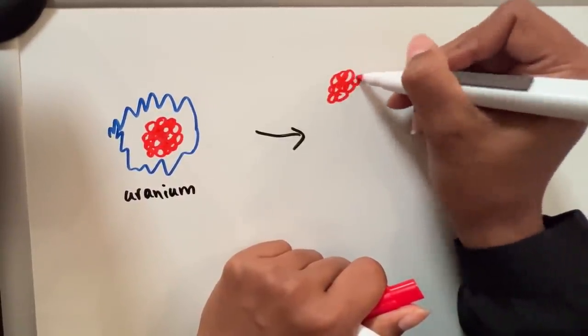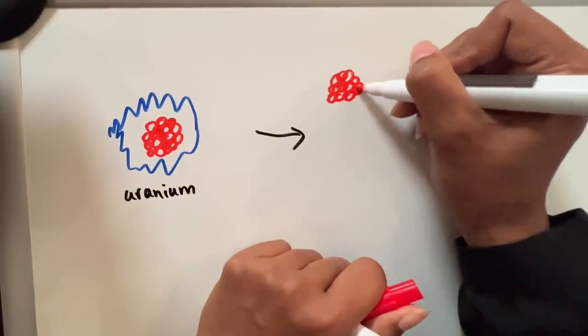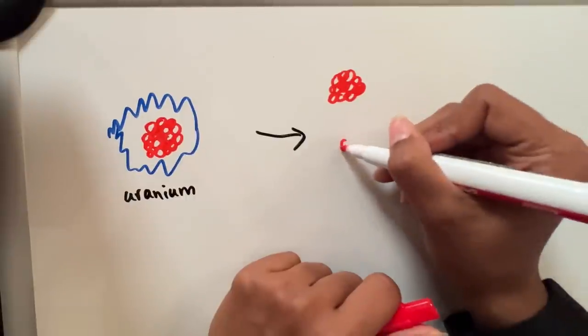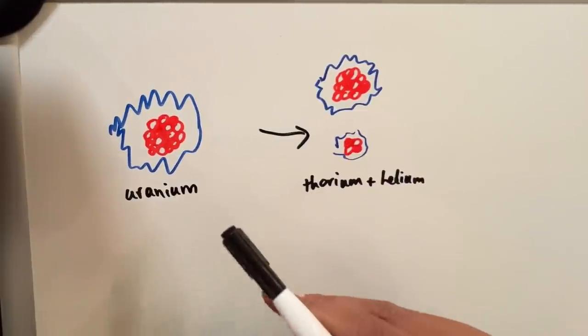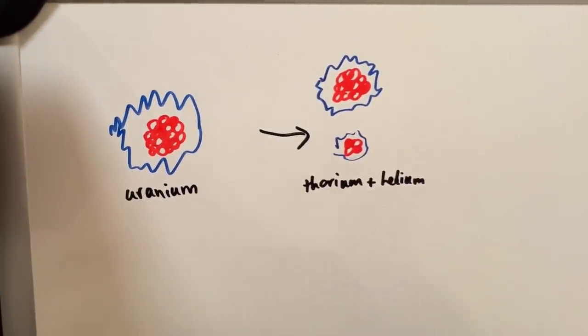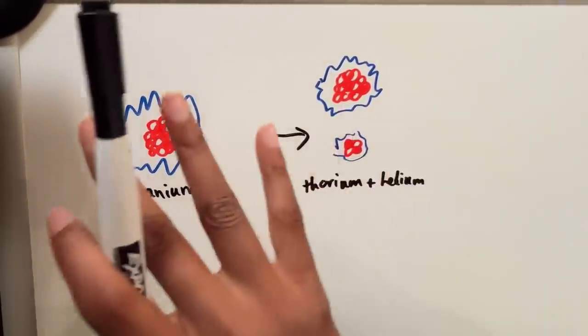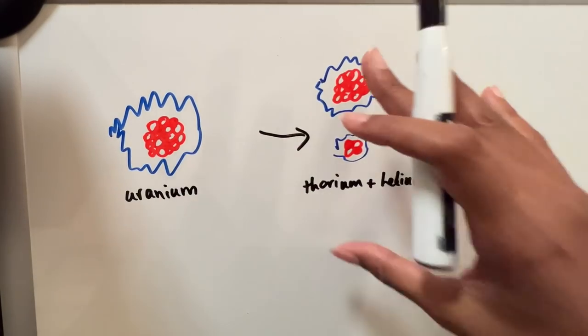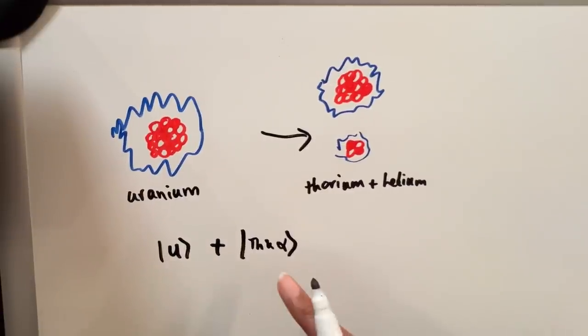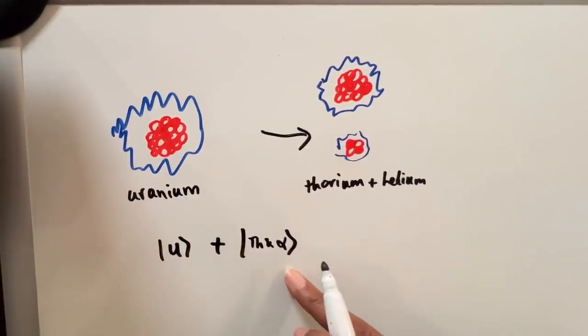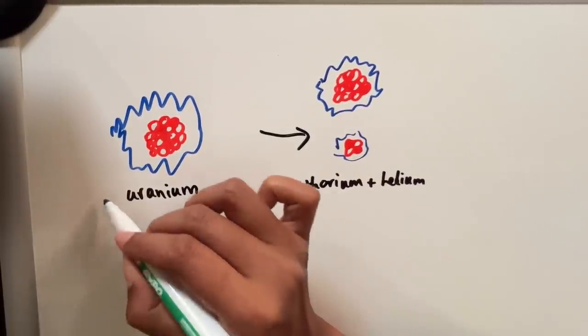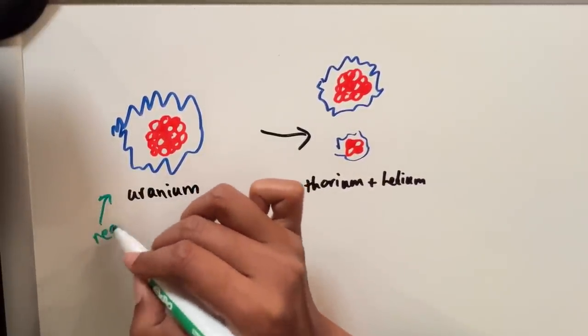Uranium can decay into a bunch of other things. One possibility is for it to decay into thorium and helium. Quantum mechanically it is in a superposition of both having not decayed and decayed. That means the state of the uranium is that it is uranium or it's thorium plus alpha particle.